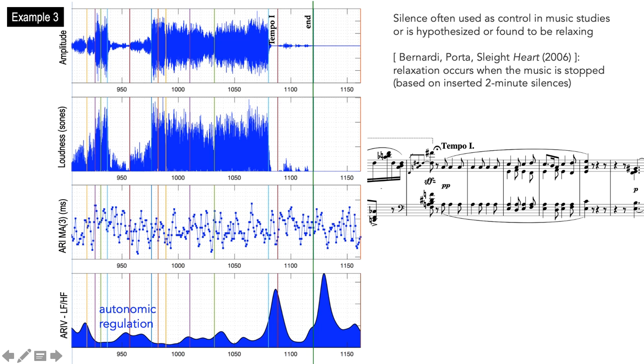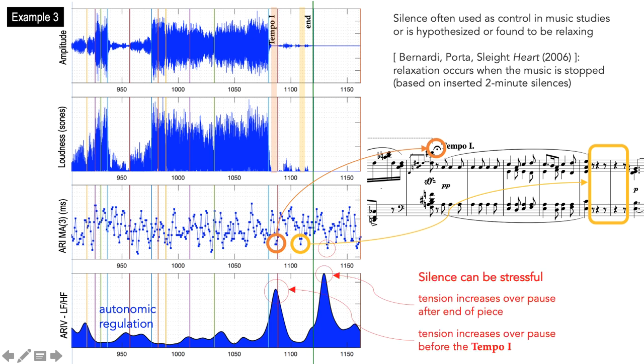The low ARI values before tempo 1 are during the pause. Another one in the next segment is during the rest. Peaks are also observed in the ratio between the low frequency and high frequency components of the ARI just before tempo 1 and in the silence after the piece ends. So silence can be stressful.